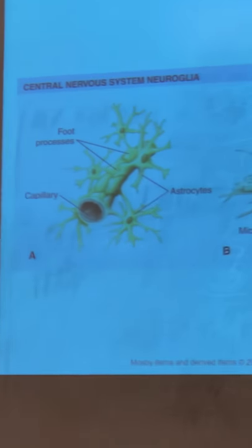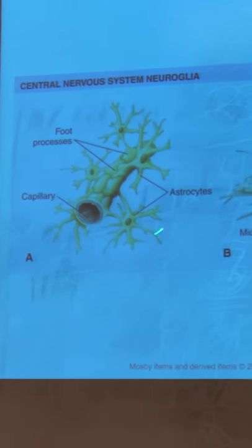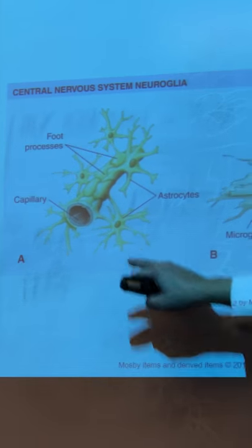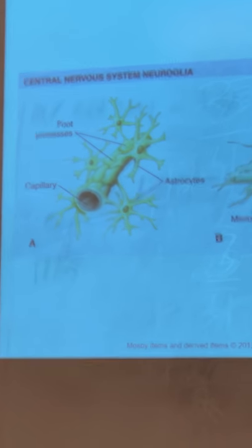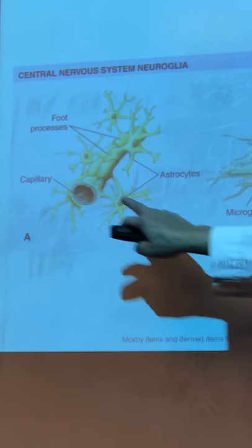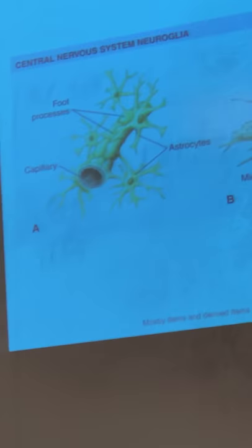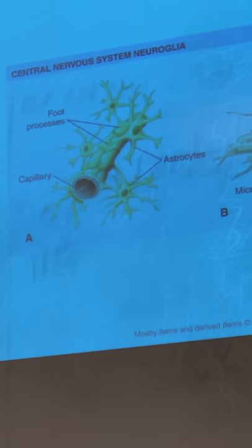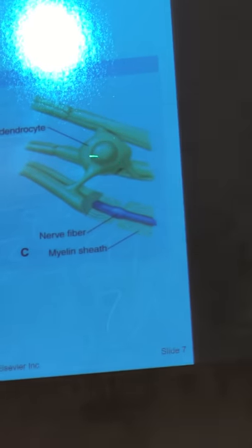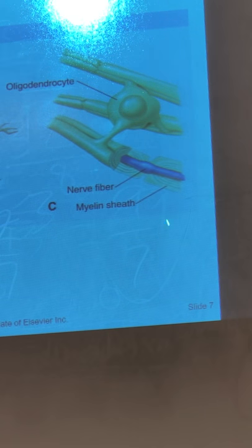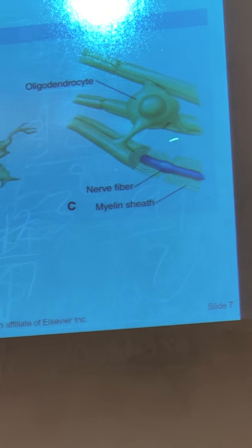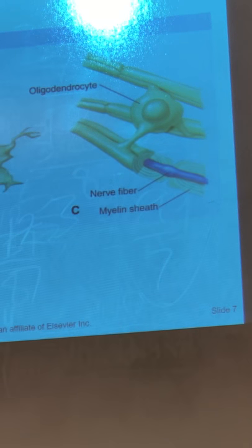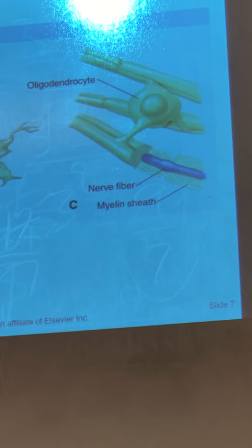The neuroglia — the astrocytes are star-shaped and they anchor the blood vessels, like this capillary, to the neuron. The microglia are the ones that carry out phagocytosis. And this is the oligodendrocyte that produces the myelin sheath, which encloses the nerve fiber itself in the central nervous system.